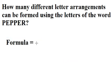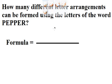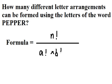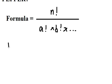First we have n factorial over a factorial times b factorial and so on. So let me explain. About n, we need to count...